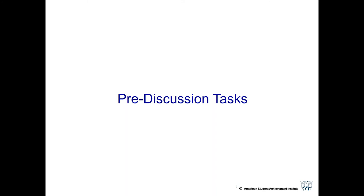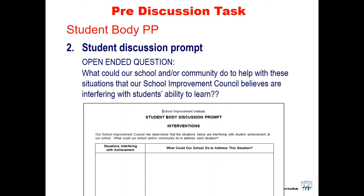As you get ready to have the discussion this month, there is a student body prompt. In the manual, there's a sheet where we give kids an open-ended question — this could be a classroom discussion prompt or a writing assignment. 'What can our school and community do to help with these situations that our School Improvement Council believes are interfering with students' learning ability?' You look back at root causes from last year, write the ones still getting in the way of learning in the left column, then ask kids what the school can do to help with that.